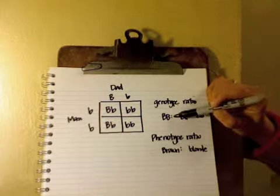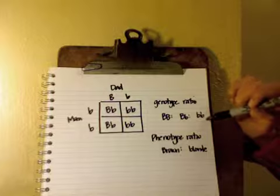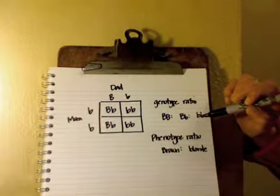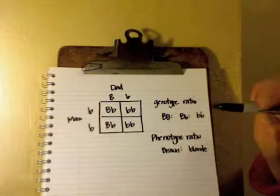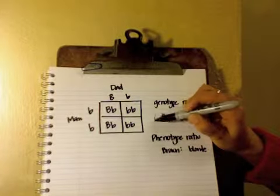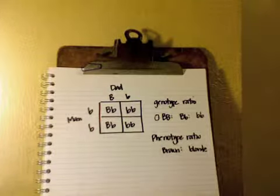To do the ratio, you're going to put colons between each of the possible combinations of genotypes that can exist, and then you're just going to count up how many there are of that one. There are none of the big B, big B ones, so you just put a zero there.